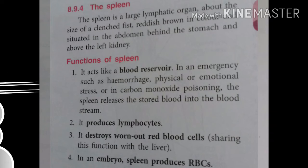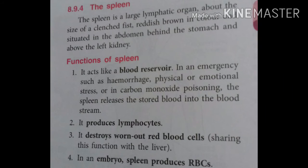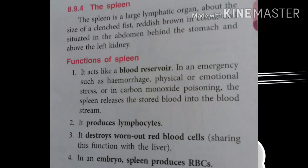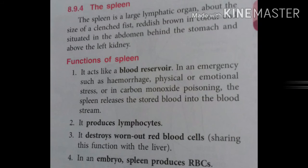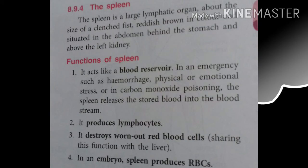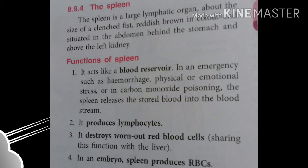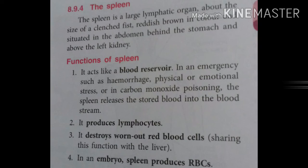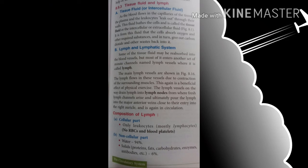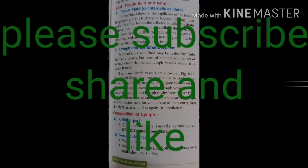The spleen is a large lymphatic organ about the size of a clenched fist, reddish-brown in color, situated in the abdomen behind the stomach and above the left kidney. It acts as a blood reservoir — a storehouse of blood. In emergencies such as hemorrhage, physical or emotional stress, or carbon monoxide poisoning, the spleen releases stored blood into the bloodstream. In an embryo, the spleen also produces RBCs.